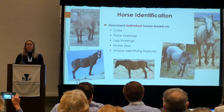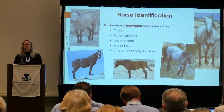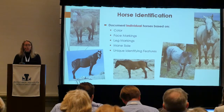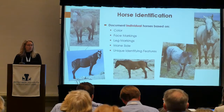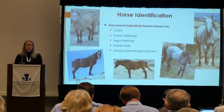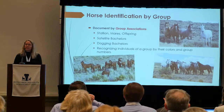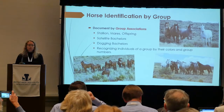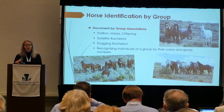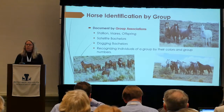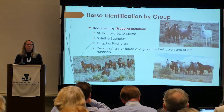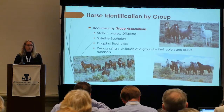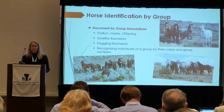Now for the basic stuff — it's not rocket science. You want to do horse identification, documenting individual horses based on their color, face markings, leg markings, their mane side, and unique identifiers. You also want to identify them by their group. These group associations rank them from their stallion to their offspring. When you're darting horses, a lot of times you want to dart that lead mare last, so it's important to know who the lead mare is. Note who the satellite and dogging bachelors are.